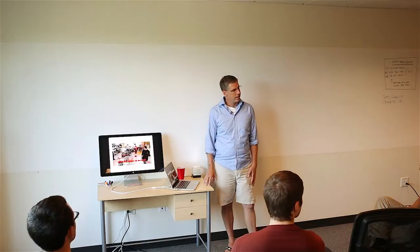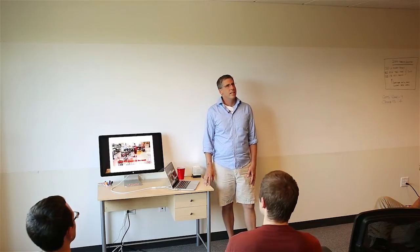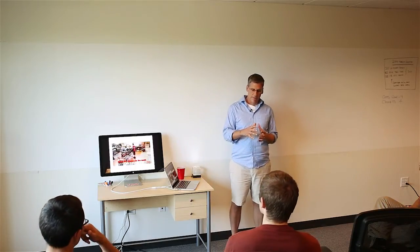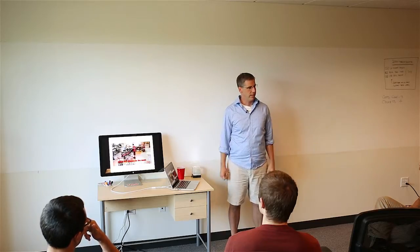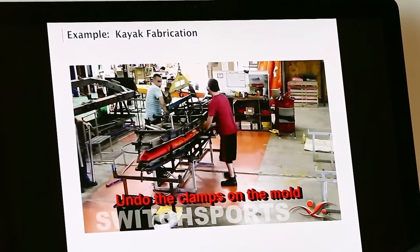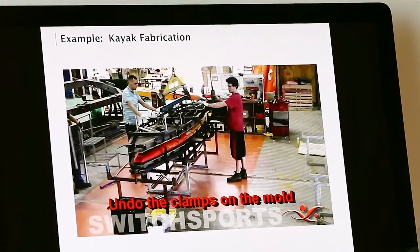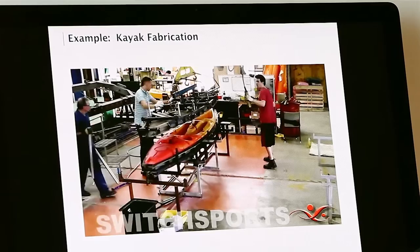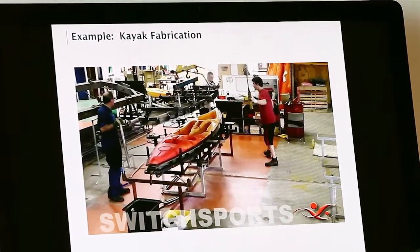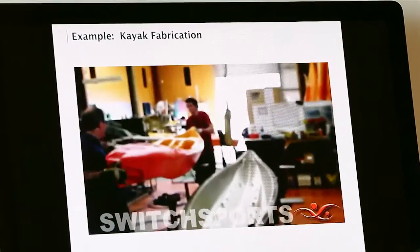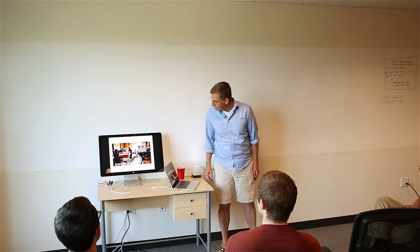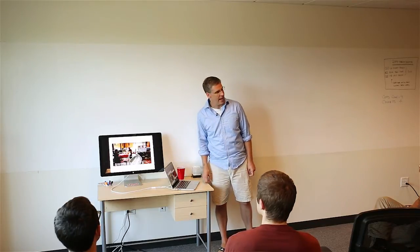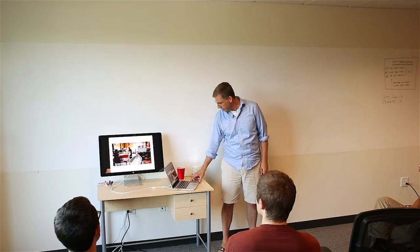In this case are those molds CNC machined out of aluminum? That's a great question. I think these may have been grown in sections and then put together. But you can build them, you can CNC them, you can grow them, you can make them out of sheet metal. There's a whole variety of different ways you could build your tools. Yeah, the great thing is they're relatively low pressure so you have a lot more freedom. And then here comes out the finished kayak. So pretty, pretty cool process.